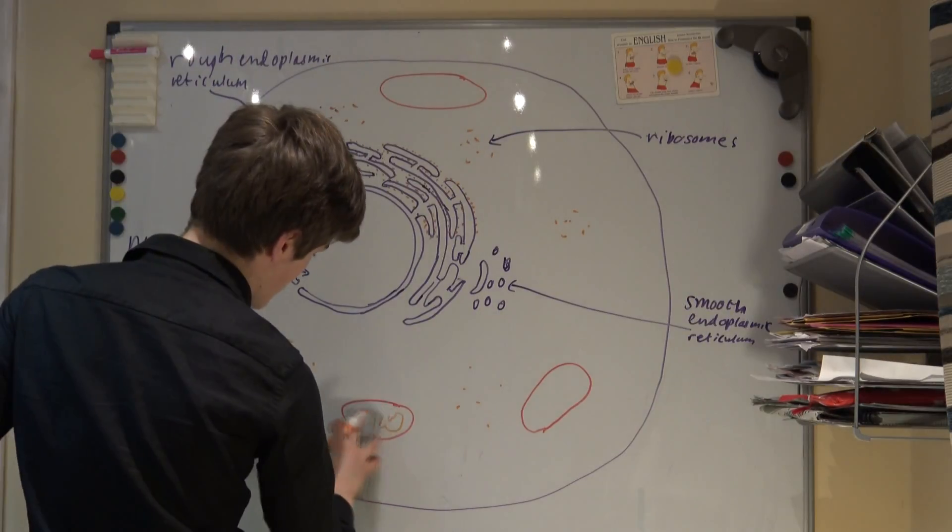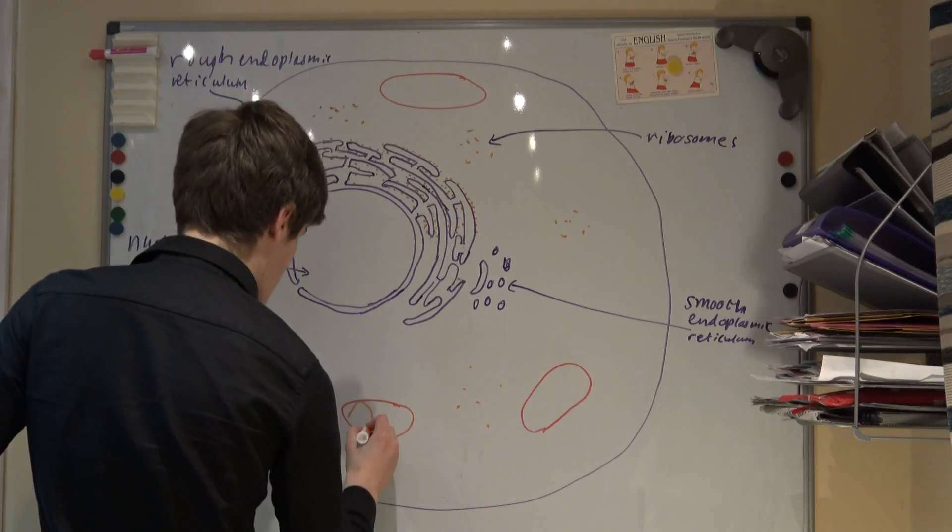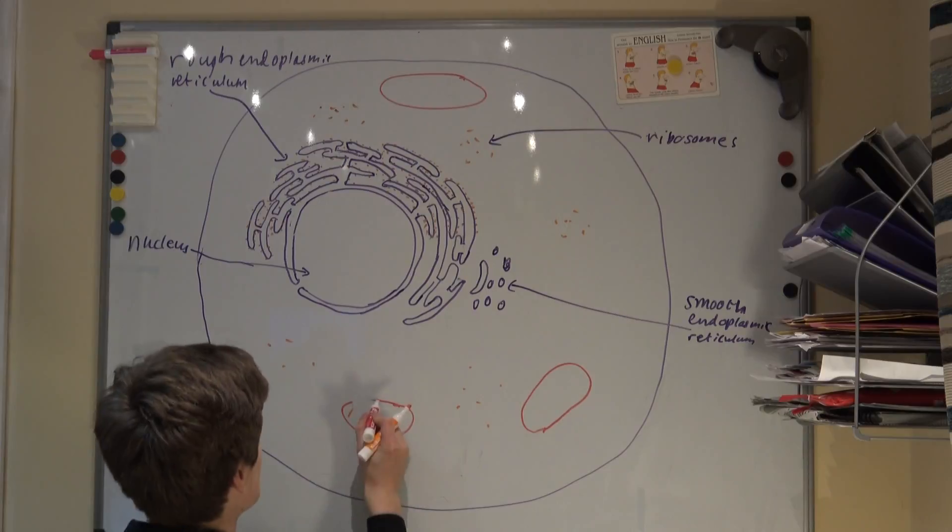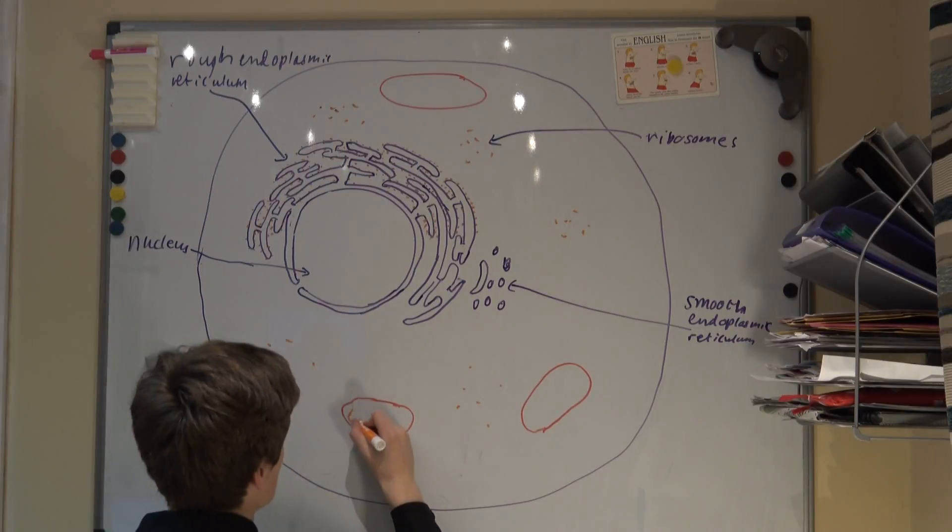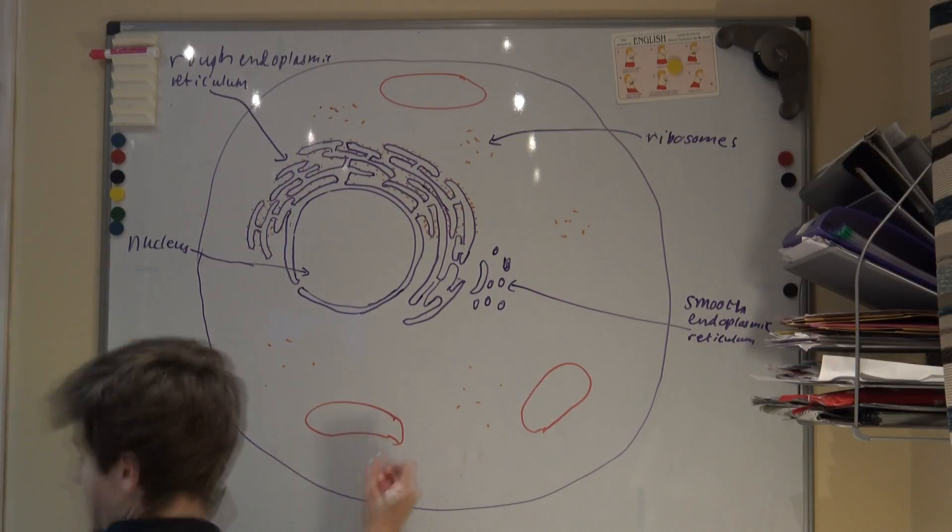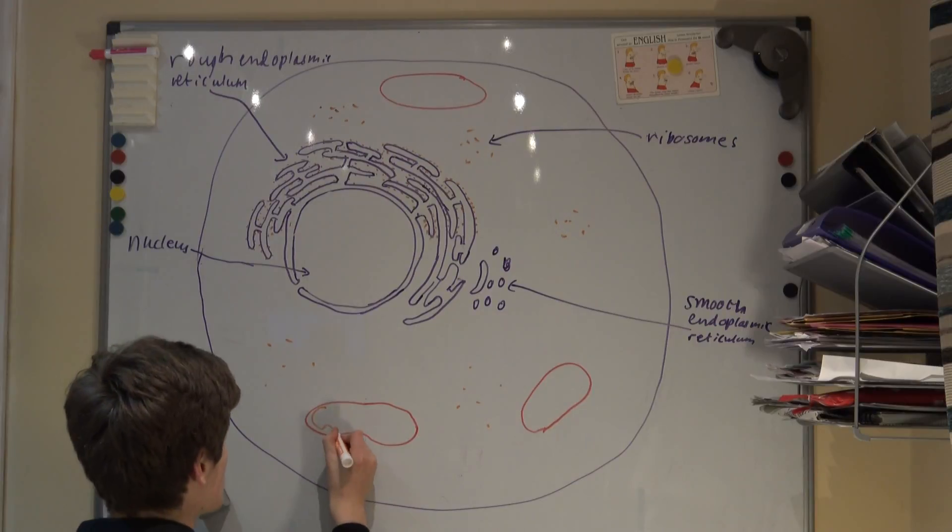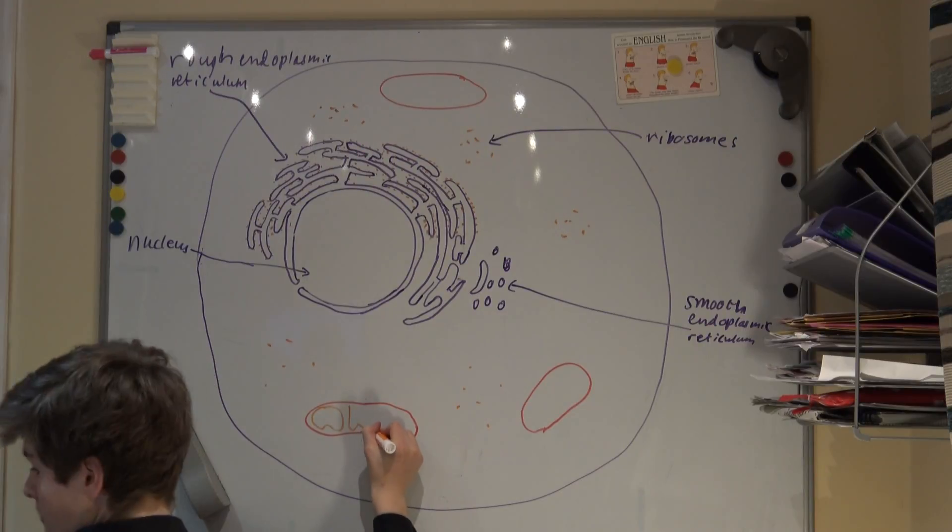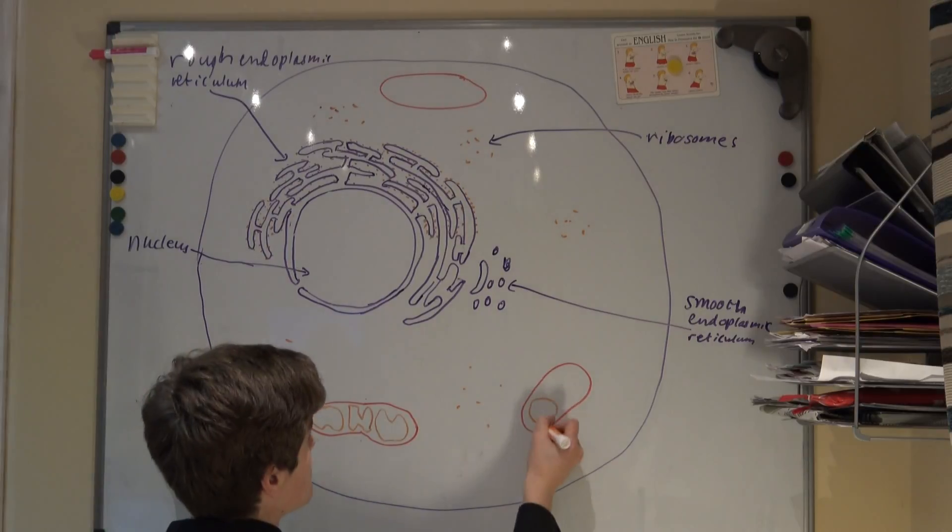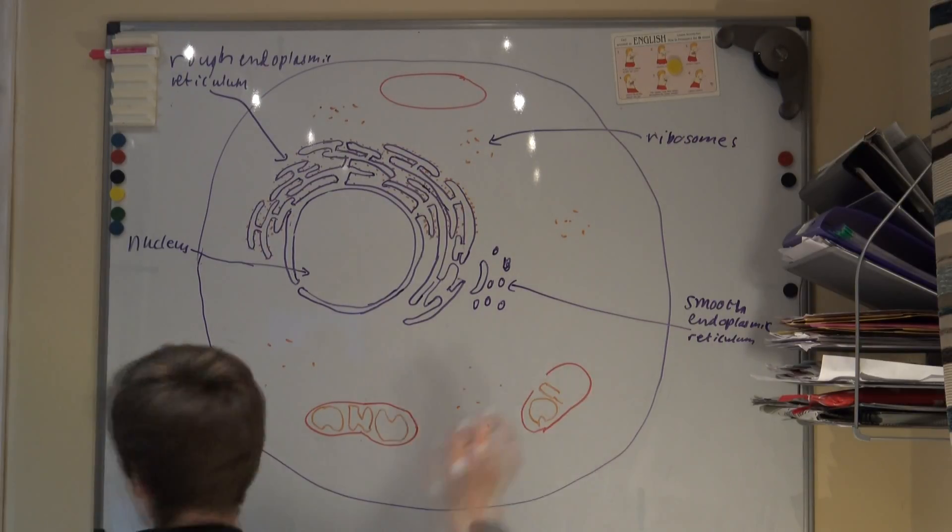Mitochondria are essential organelles in almost all eukaryotic cells. They are the site of the final stages of cellular respiration. The number of mitochondria in a cell is generally a reflection of the amount of energy it uses. Mitochondria have a double membrane. The inner membrane is highly folded to form structures called cristae. The membrane forming the cristae contains the enzymes used in aerobic respiration.